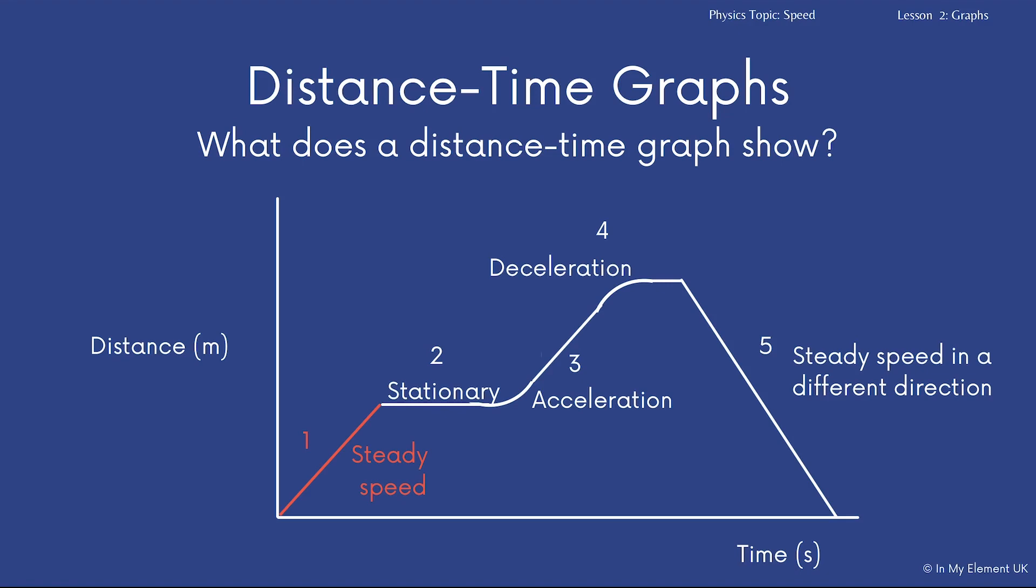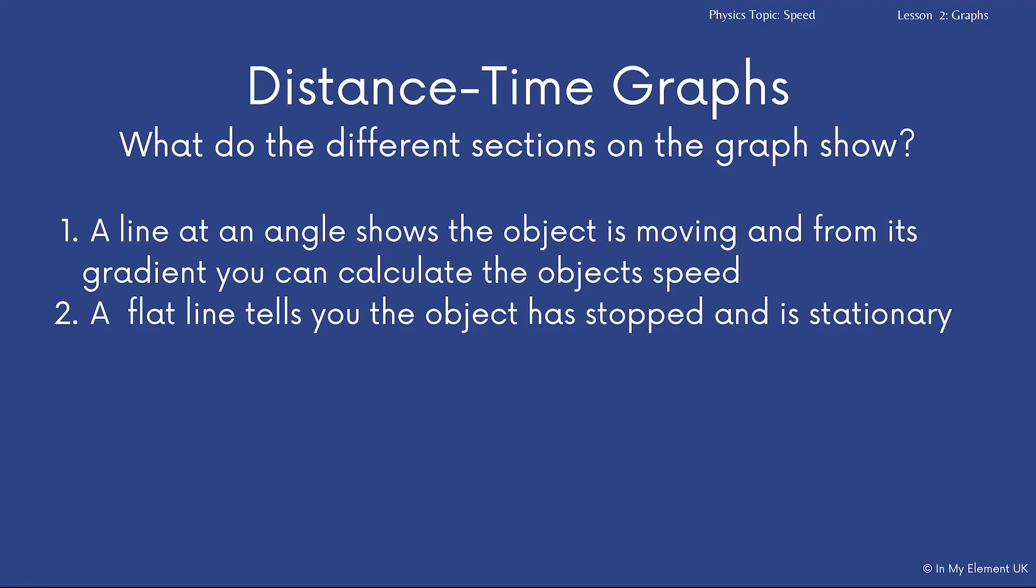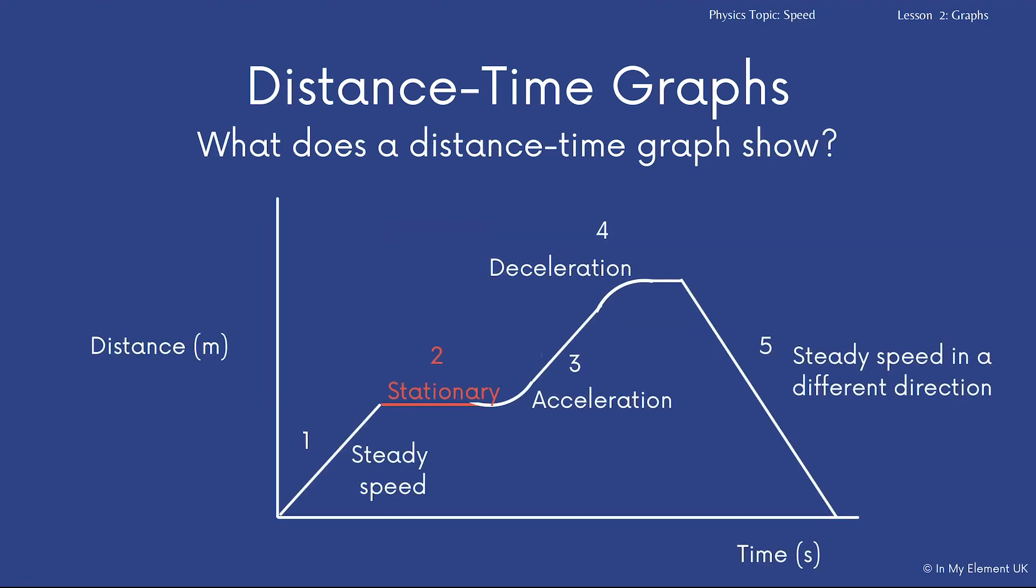You can calculate at time z, it has moved a certain distance by drawing and measuring that out on there. Now the second point, flat line, we talked about this, it's stationary, that means the object has stopped.